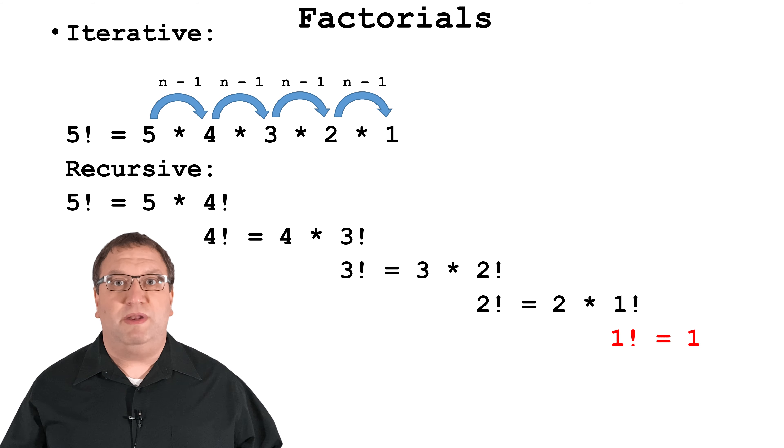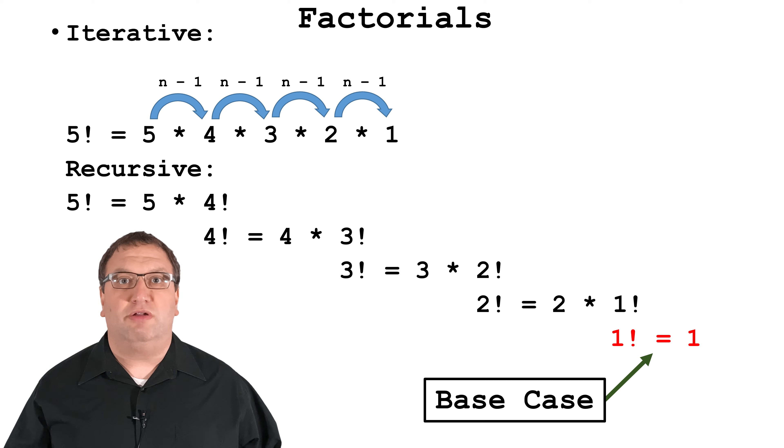After all, 4 factorial is 4 times 3 times 2 times 1. And we can say 4 factorial is equal to 4 times 3 factorial. We can keep this up until we hit 1 factorial. And we know that 1 factorial equals 1.